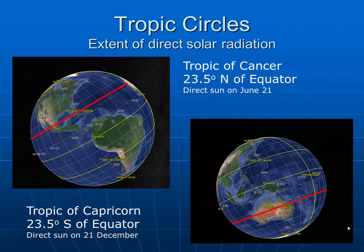The tropics are other important designations on the planet. The northern tropic is the Tropic of Cancer, and the southern tropic is the Tropic of Capricorn. Related to the Earth's axial tilt, they are 23.5 degrees north and 23.5 degrees south of the equator. It is between these lines that receives direct sunlight. On or around the 21st of June, the Tropic of Cancer is bathed with direct sunlight. On and around the 21st of December, the Tropic of Capricorn is receiving the most direct sunlight.